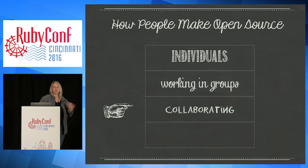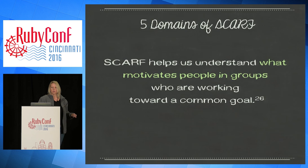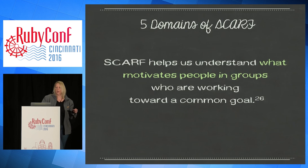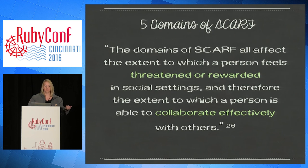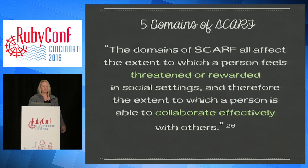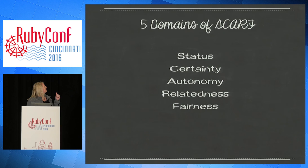Now let's have our group actually do something — not just hanging out, but actually trying to write software and produce something. Let's look at SCARF, which helps us understand what motivates people in groups — the extent to which people feel threatened or rewarded. Here are the five domains of SCARF: Status, Certainty, Autonomy, Relatedness, and Fairness. These are the buckets of what's important to people. Status is about acknowledgement and recognition — where they fall in relation to others. For some people that's super important. They don't care about the money; they just want to be recognized and feel important in the group.